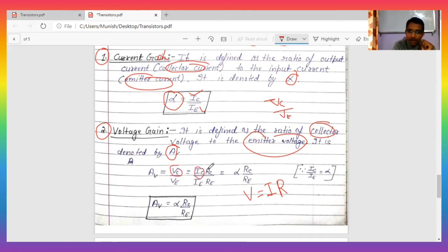Similarly, for emitter voltage, IE is emitter current and RE is emitter resistance. Now see, this IC divided by IE is what we calculated as alpha earlier. So we can write alpha times RC divided by RE, and this becomes your formula for voltage gain.